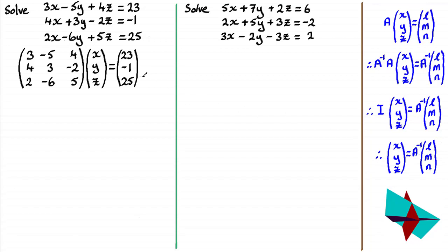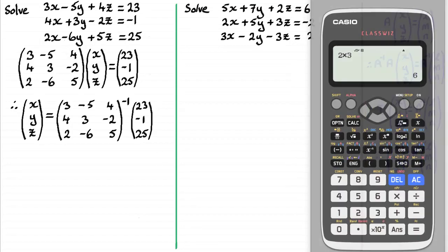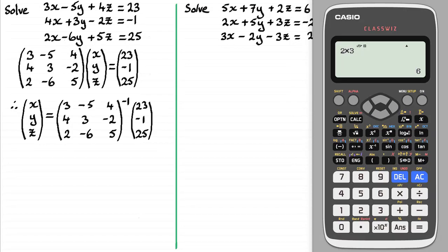So to solve this matrix equation to get x, y, z then, what we've got is x, y, z equals the inverse of this matrix. You can see I've written that matrix in with a -1 up there, times 23, -1, 25. So I'll take you through the method of doing this. If you've got a calculator something like this.